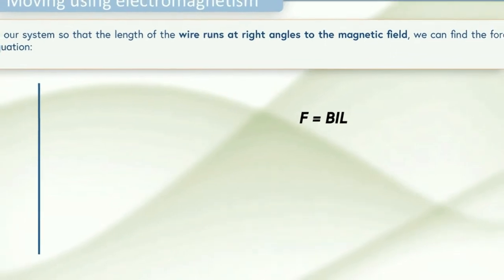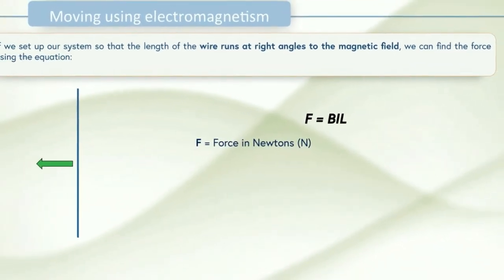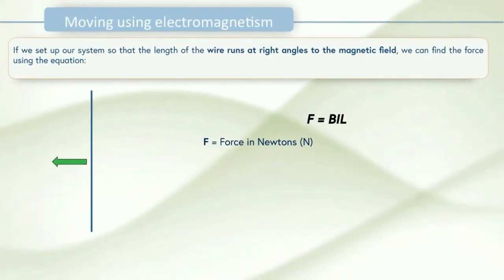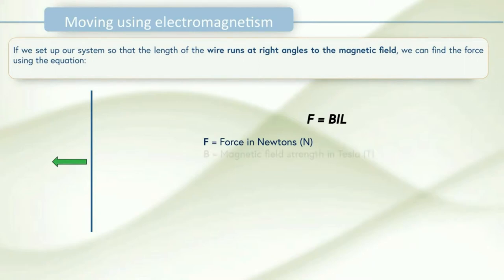Well first of all here's our wire. F is the force in Newtons so as we saw that was the direction the wire was going to move in represented by the green arrow. B is the magnetic field strength of the applied field in Tesla or T. Remember that the cross indicates the field traveling away and a dot would indicate it coming towards you. Then we have I. This is the current passing through our wire in amps.